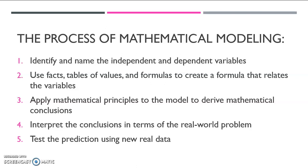Step four is to interpret the conclusions in terms of the real world problem. So you always want to take your conclusion back to what it was talking about. Instead of saying the answer is 286, you would say, I think in 10 years there might be 286 people in this town. And finally, step five, this is the hardest one to do. Test the prediction using new real data. You want to go back to that same situation and get more data and see if whatever you predicted was actually right.